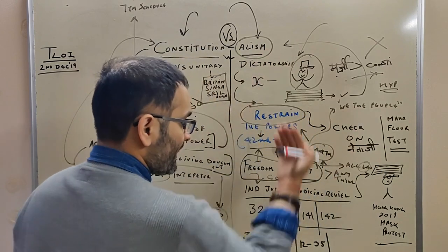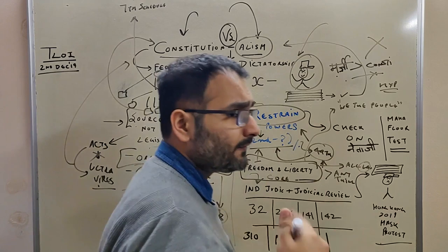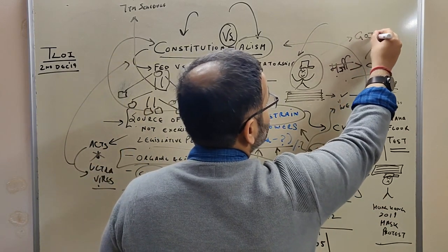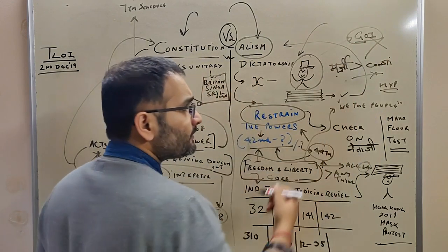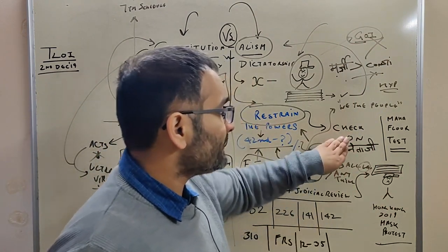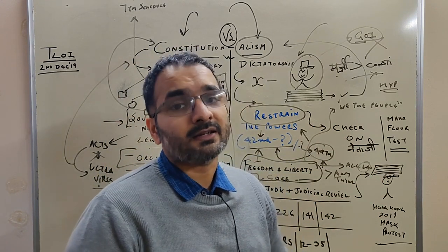So constitutionalism relates to this. So it wants to restrain the powers of whom? Of a dictator, no? The government. So G-O-I in this case. And they want to know how will you exactly restrain the powers? So how will you keep a check on Netaji? Otherwise you know what Netaji does in our country.